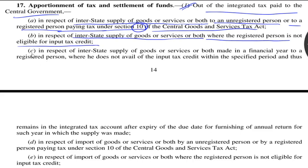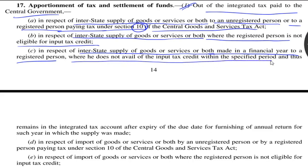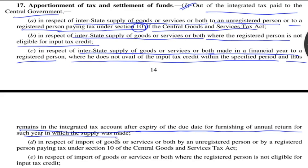Again, out of integrated tax paid to the central government in respect of interstate supply of goods, services or both, made in a financial year to a registered person who does not avail input tax credit within the specified period, and thus remains in the integrated tax account after the expiry of the due date for furnishing the annual return for such year in which the supply was made.